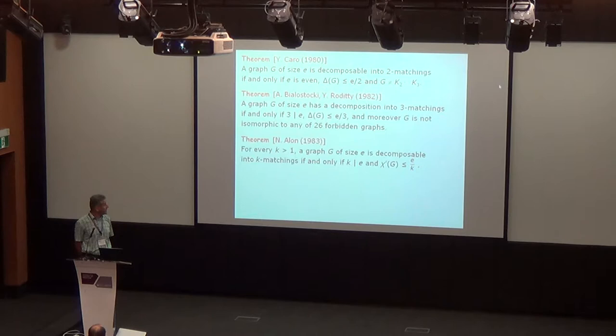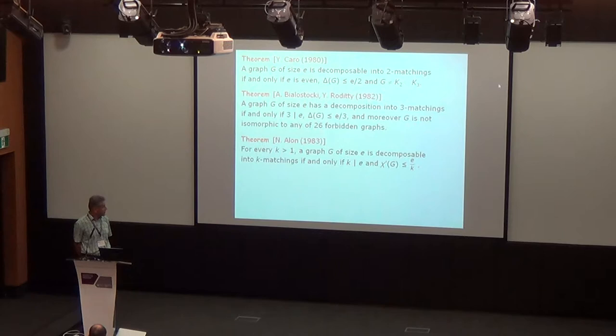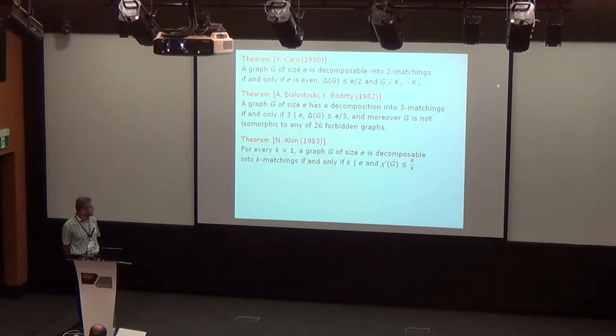In every other case those necessary conditions are also sufficient. When we go to the next case where matchings have three edges, the first two necessary conditions are practically the same, but now the list of forbidden graphs contains 26 of them. This was later generalized into matchings of any size k, proving that a decomposition exists provided the necessary conditions of this type are satisfied. So edge decompositions into matchings are completely solved.